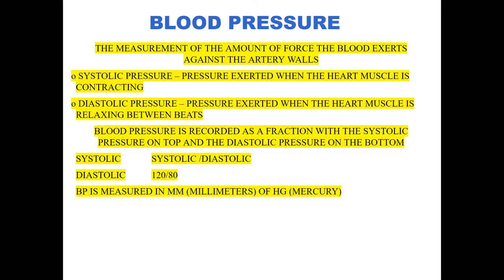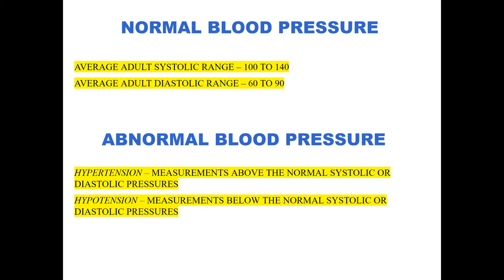The average systolic range is 100 to 140, and the average adult diastolic is 60 to 90. Every person is different — these are parameters for 'normal,' but your normal may look different depending on your overall health. If you're an endurance athlete or an athlete in general, we can anticipate you having a lower blood pressure than someone who lives a sedentary lifestyle.